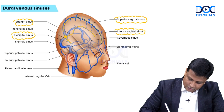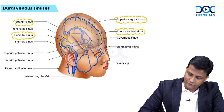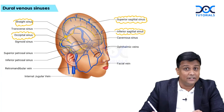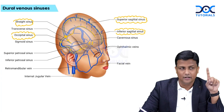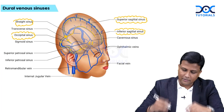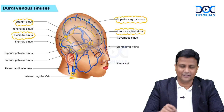Once blood reaches the confluence of sinuses, it drains away via the transverse sinus. The transverse sinus then takes a turn, becoming the sigmoid sinus. The sigmoid sinus combines with the inferior petrosal sinus — which drains blood from the cavernous sinus — and these two together form the internal jugular vein.